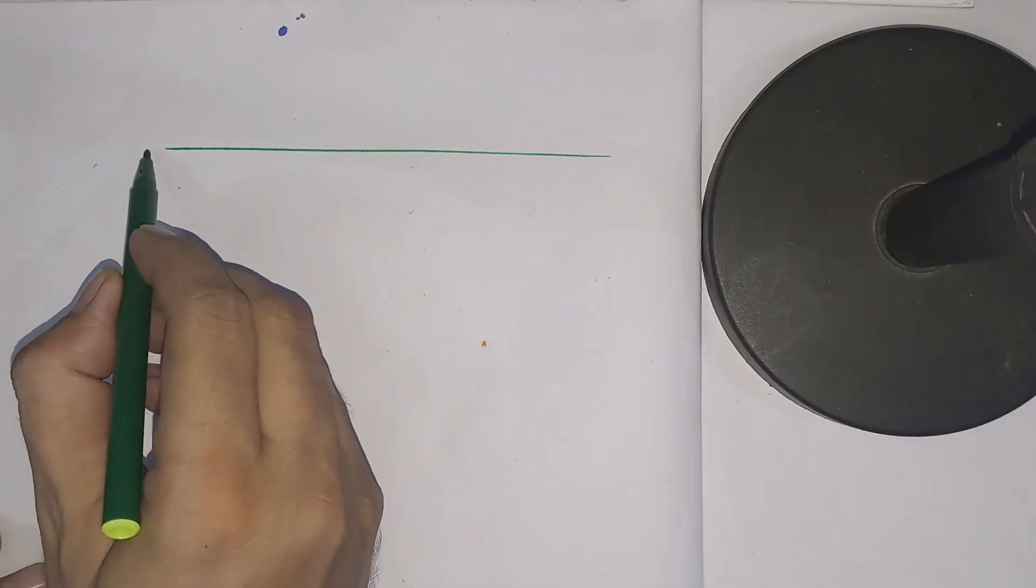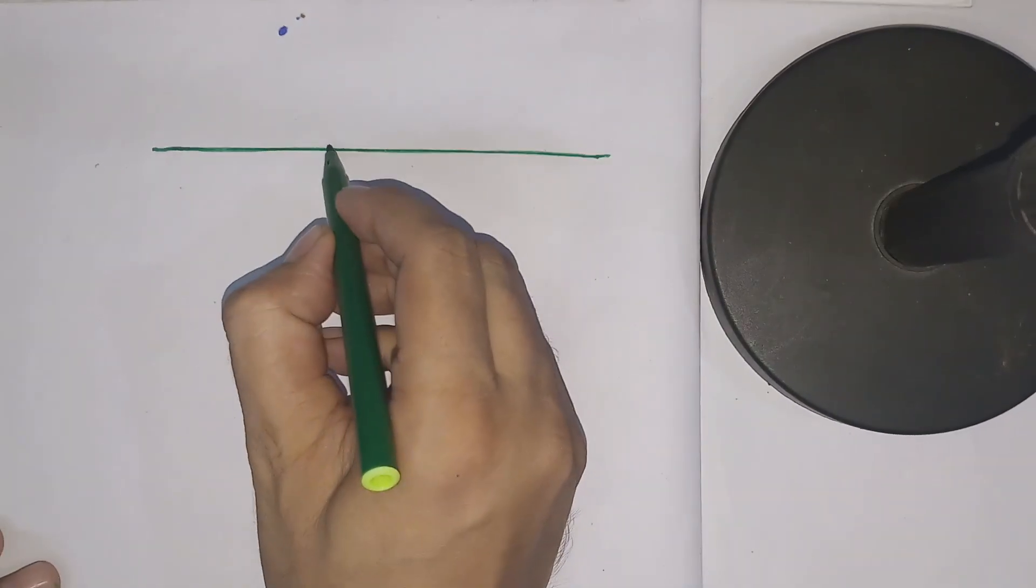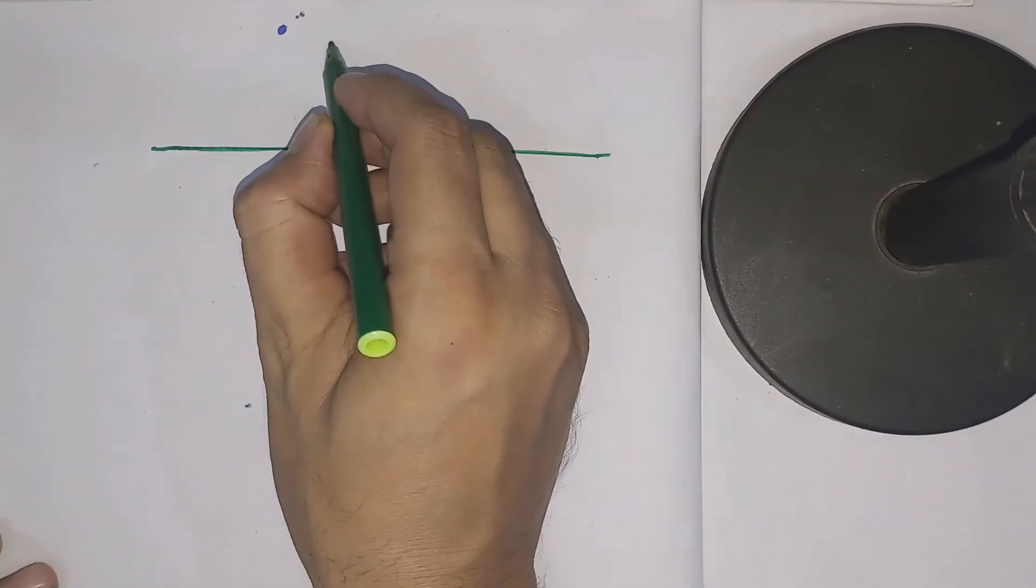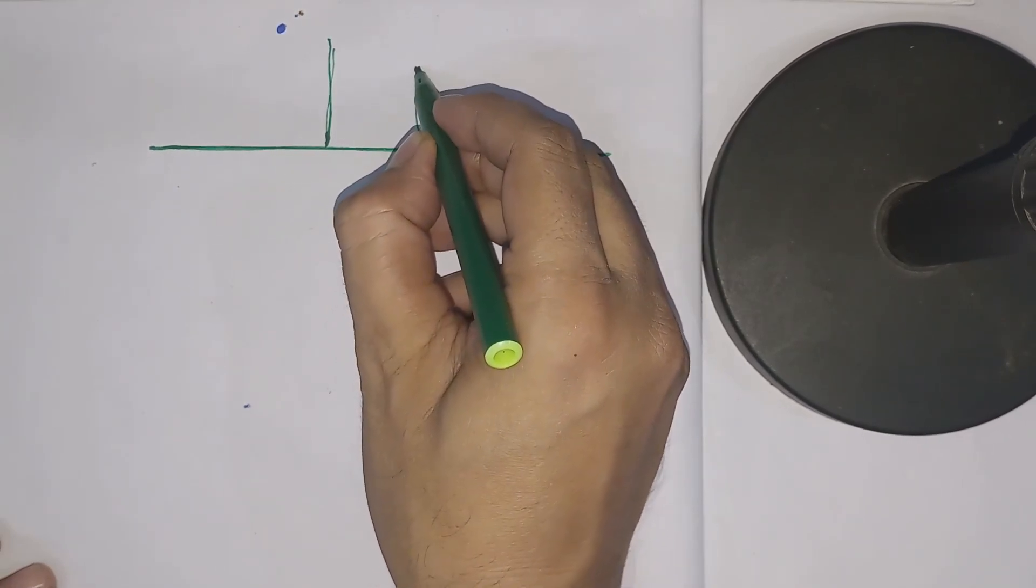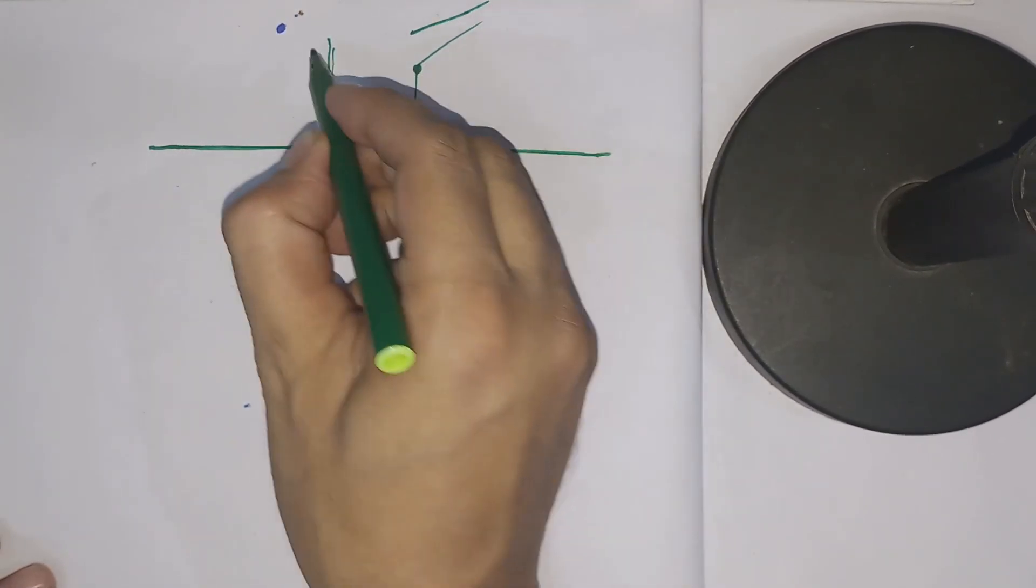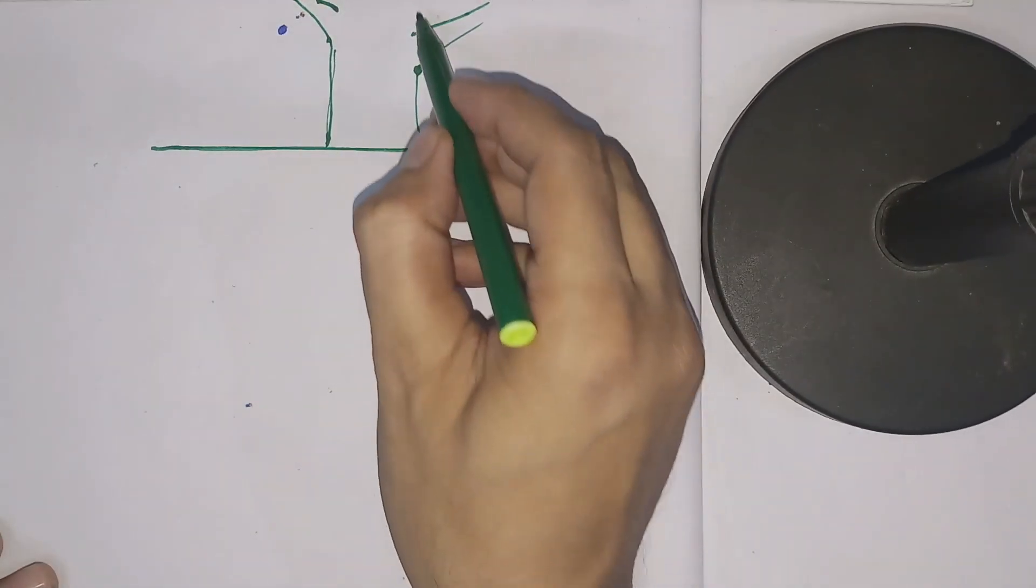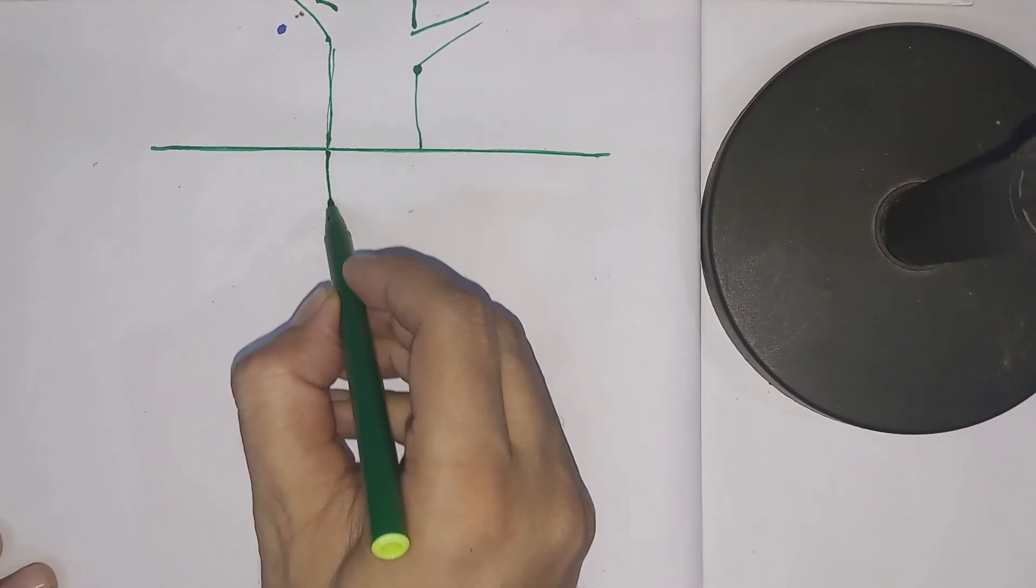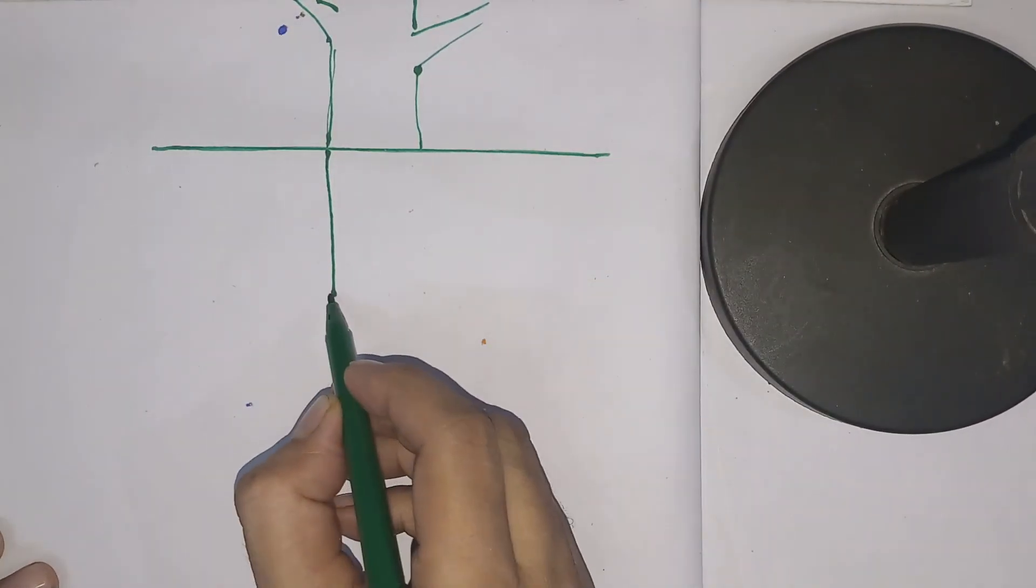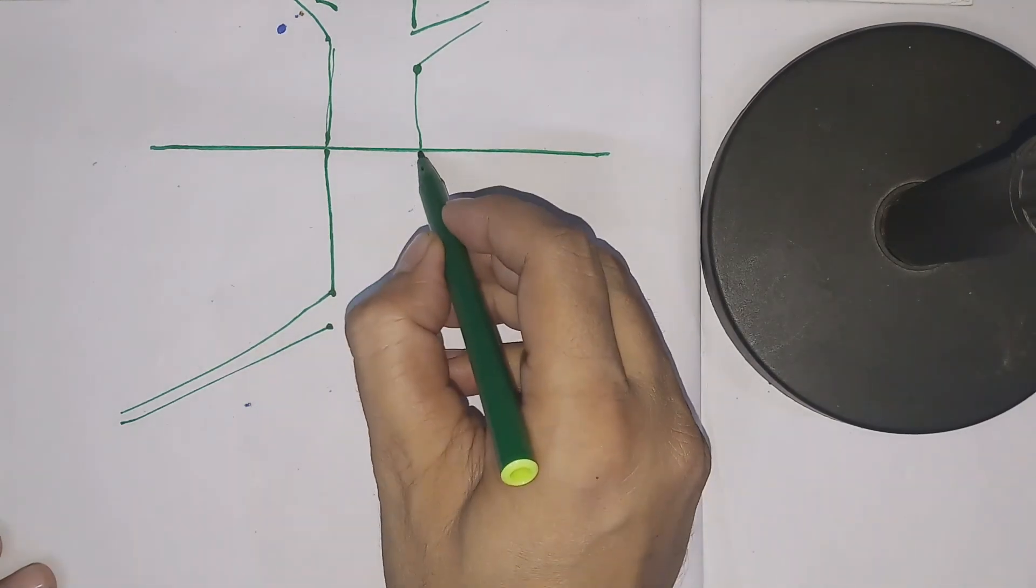Well, in this video we will discuss the structure and different zones of a plant root. So let us draw it first. This is the upper portion of the plant that grows above the ground, that is known as shoot, and the portion that grows beneath the ground, that is known as the root.